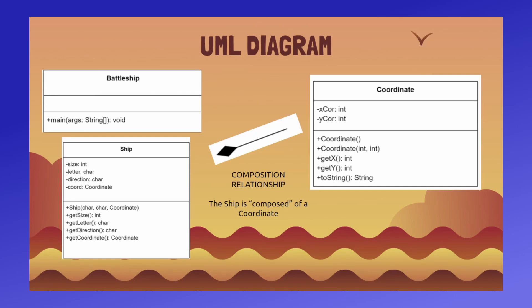This video will go over the UML diagram consisting of the classes and methods that we'll be implementing in order to make this game. The game consists of six classes: the Ship class, the Coordinate class, the Boards class, the Player class, the Computer class, and finally the Battleship class.